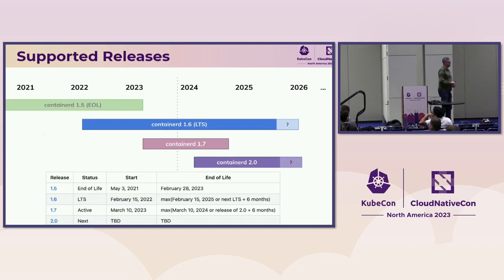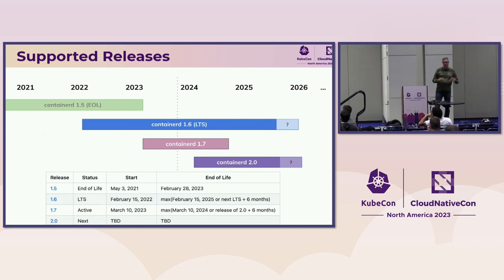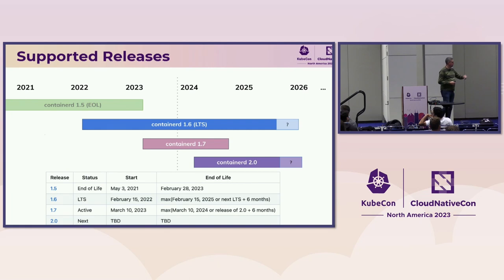Talking about our releases: 1.5 is fully end of life. 1.6 is our main long-term support release that we announced a KubeCon ago. ContainerD 1.7 was the last of the 1.x line. ContainerD 2.0 just started the beta release cycle and should have a GA release in early 2024 — dependent on testing and feedback during the beta and RC lifecycle. There are some question marks about end-of-life dates, as they're either a max date or based on a specific release plus six months.